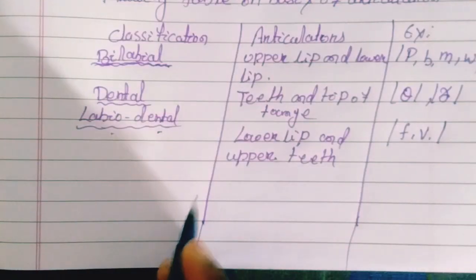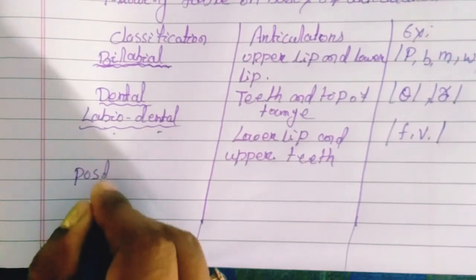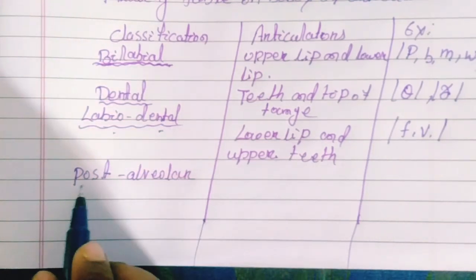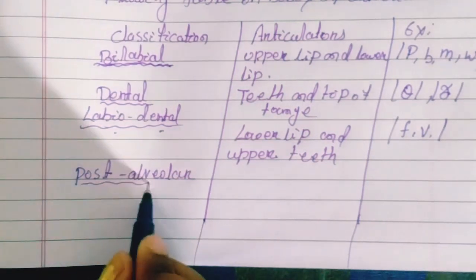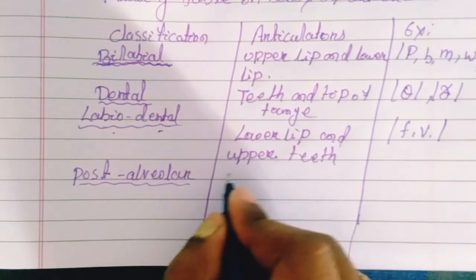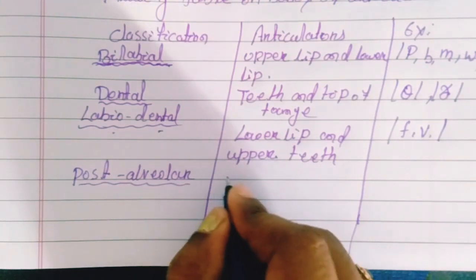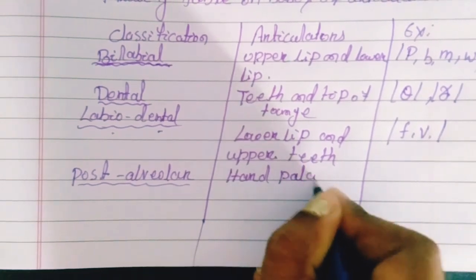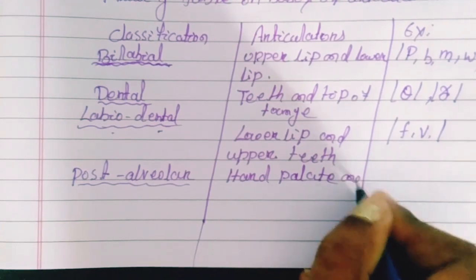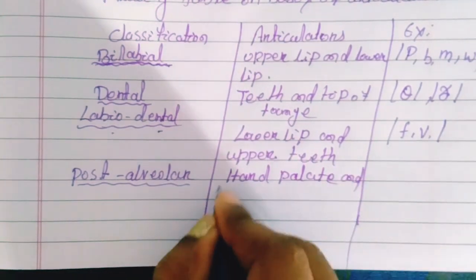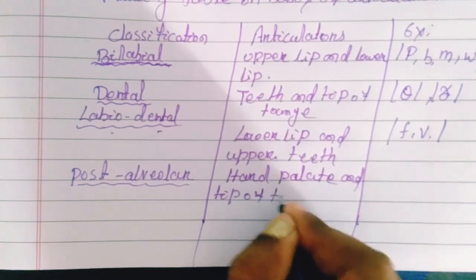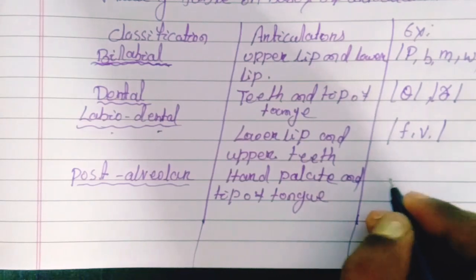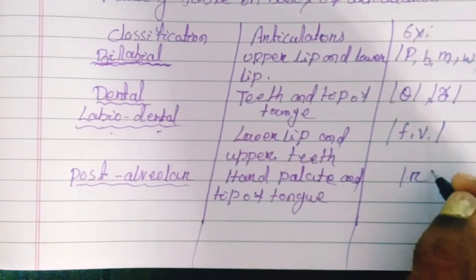Next is post-alveolar. During the production of post-alveolar consonants, the articulators are the hard palate and the tip of tongue. The example of post-alveolar sounds is the /r/ sound.